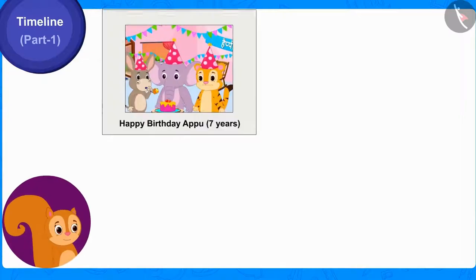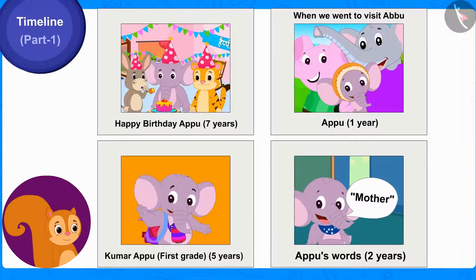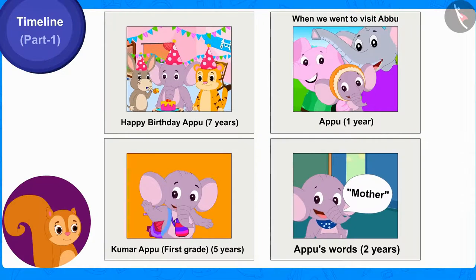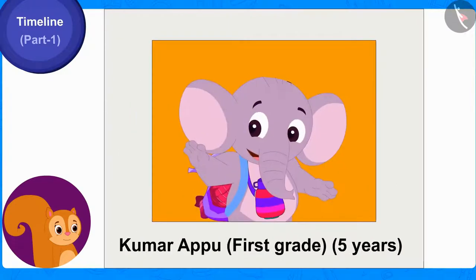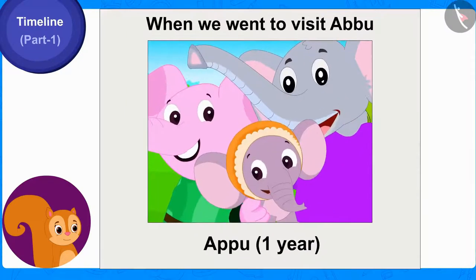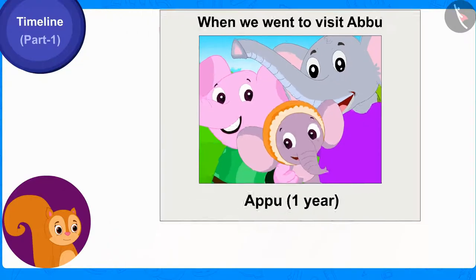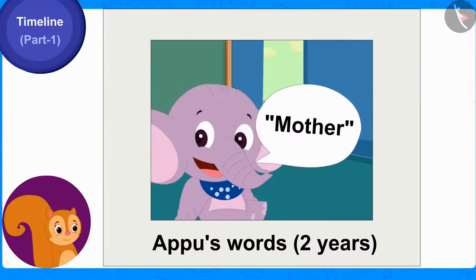Chanda removed four photos from Appu's album. In this picture, Appu is celebrating his seventh birthday. In this one, Appu was in first grade. This picture was taken when Appu was one year old and his parents had taken him on a trip to Abu. And this last picture was taken when Appu first started speaking the word 'Mother' at the age of two.